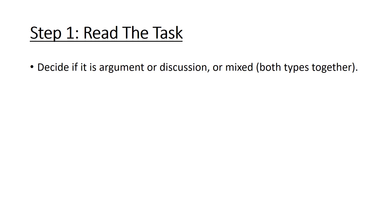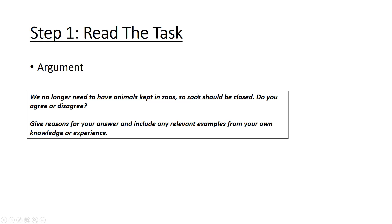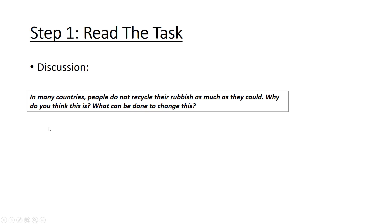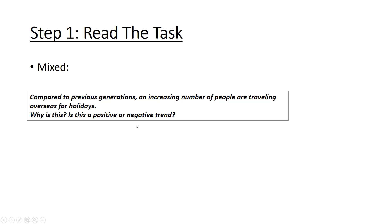Step one: read the task and decide if it's an argument, a discussion, or a mixed type of task. In an argument task you will see words like 'agree or disagree' or something similar, and you have to argue a side. In a discussion essay you are not really asked for your opinion — you don't need to take a side. In this example you can see they ask you for reasons and possible solutions.